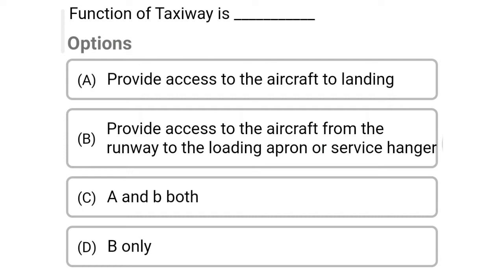So the first question: function of taxiway is — Option A, provide access to the aircraft to landing. Option B, provide access to the aircraft from the runway to the loading apron or service hangar. Option C, both A and B. Option D, B only. So the correct answer is Option D, B only.